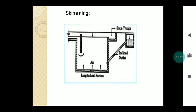The diagram shows the skimming tank in which compressed air is introduced, causing scum to form on the surface of the sewage, which is then removed by skimming.